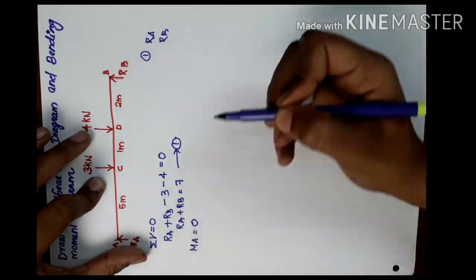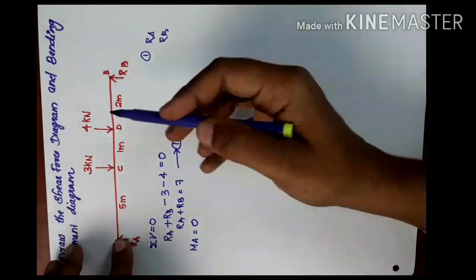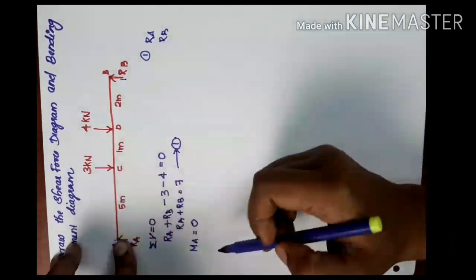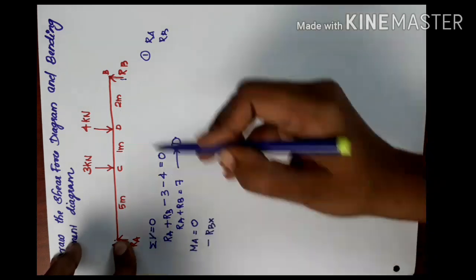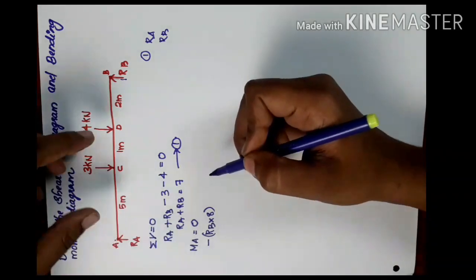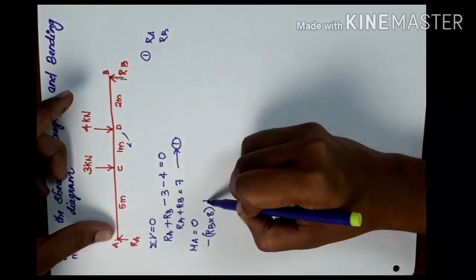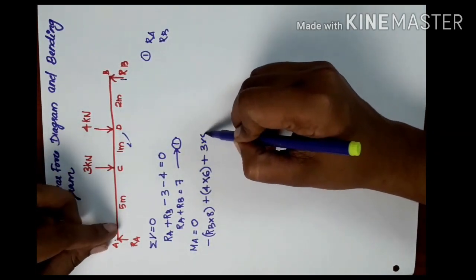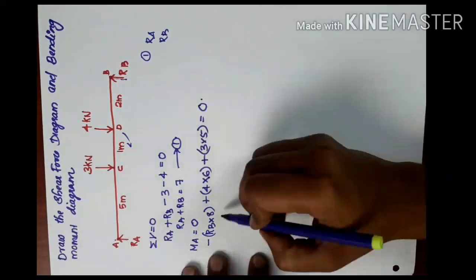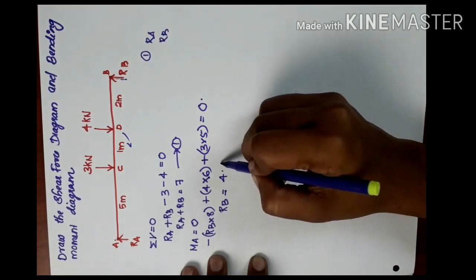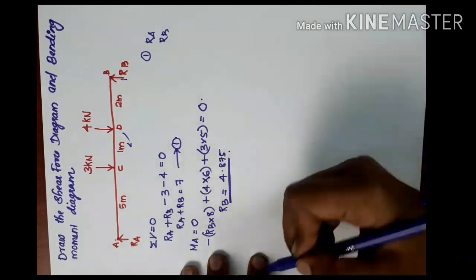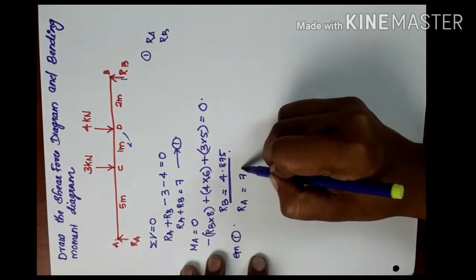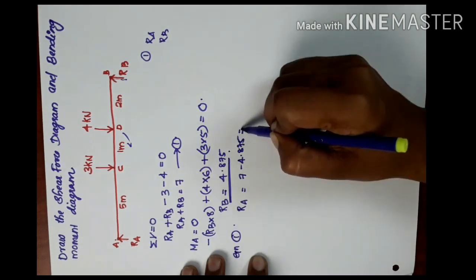Taking the moment at a point equal to zero — we have three forces. RB is anti-clockwise, so minus RB into distance, where RB into distance equals 8. The load of 4 is downward, clockwise, equal to 6. The load of 3 equals 5, all equal to zero. Solving this, RB equals 4.875. From equation 1, RA equals 7 minus 4.875, which is 2.125.